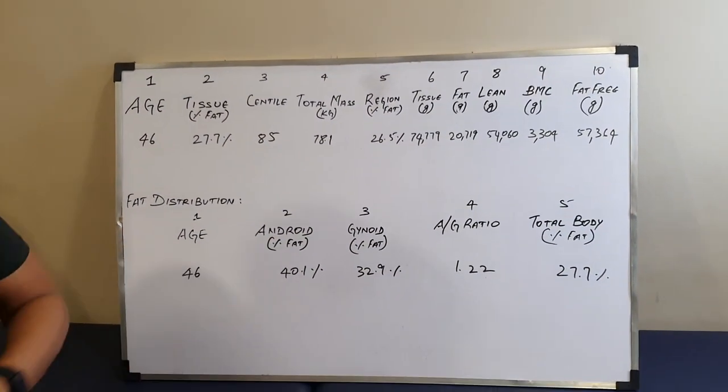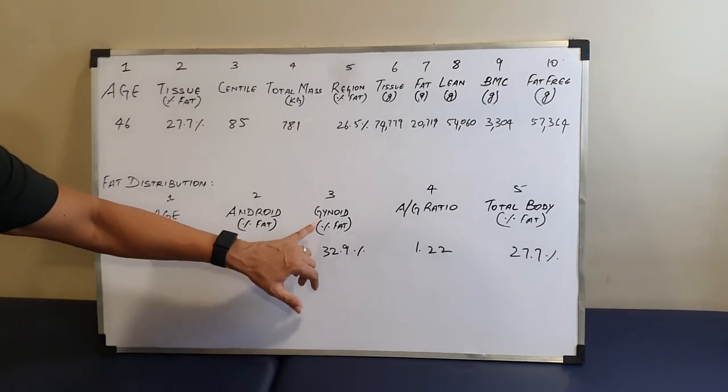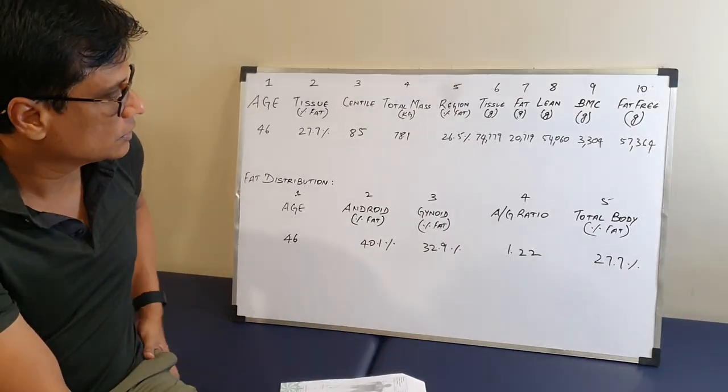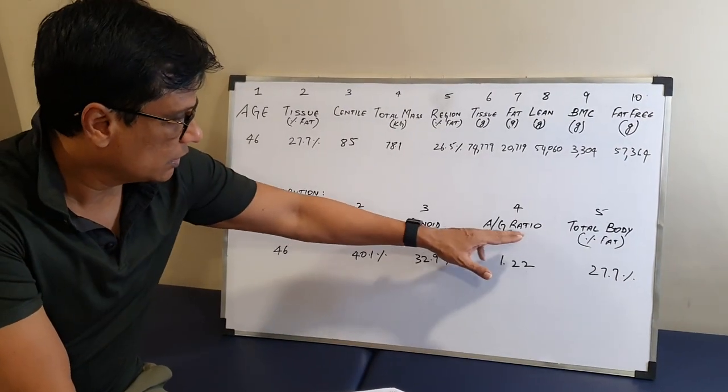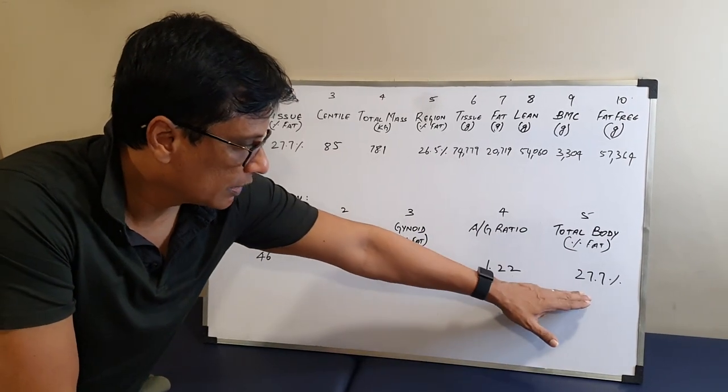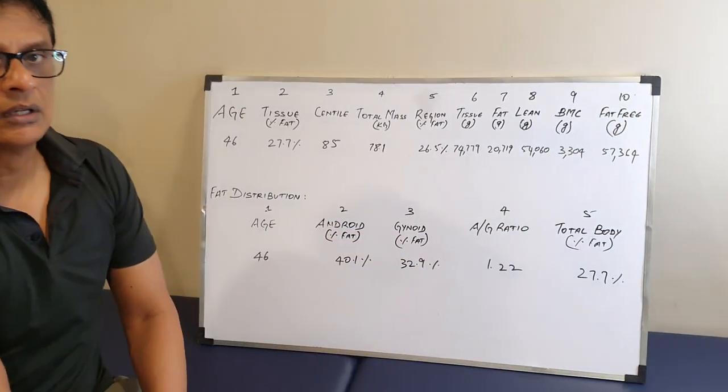Android fat is the fat which you carry around your stomach. Gynoid fat is the fat you carry around your hips. This is the ratio, A/G, Android to Gynoid ratio. Total body fat percentage is 27.7. Thank you.